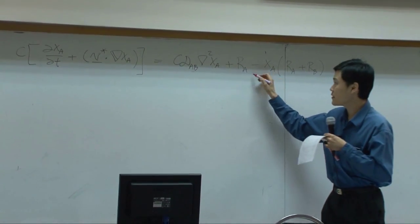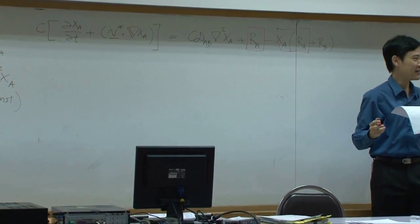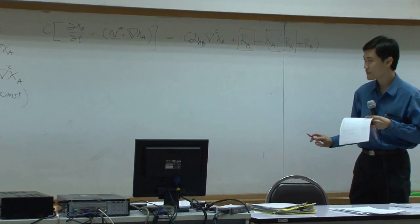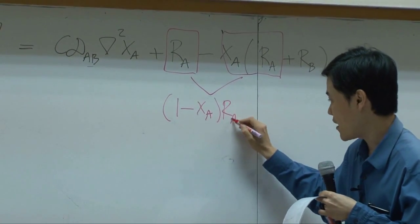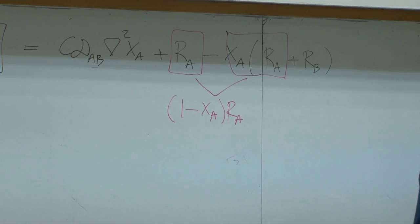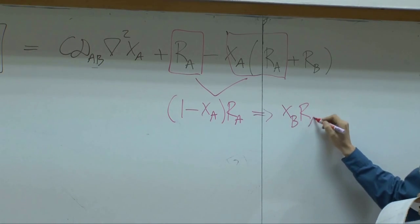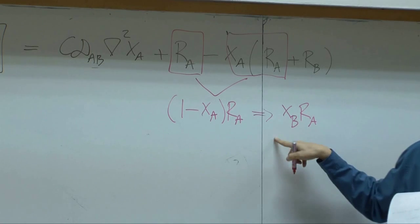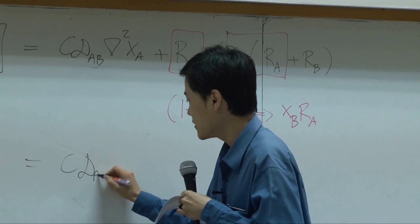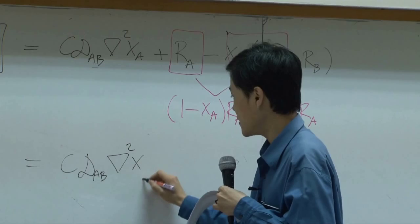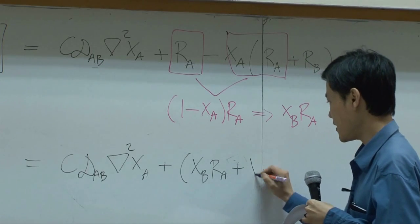From here you have ra. I'm going to combine these two terms. You have 1 minus xa times ra, which is equal to xb ra, right? For binary system, 1 minus xa is xb. So you can write down this equation to be cdab del square xa plus xb ra minus xa rb.